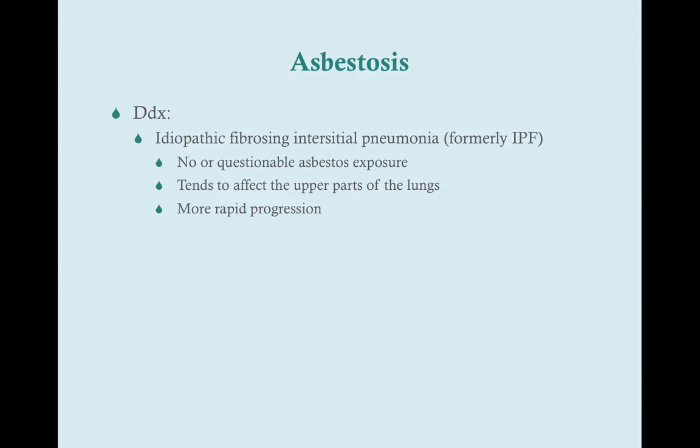IFIP is a heterogeneous group of disorders that will be addressed in a different section, but it is a diagnosis of exclusion. We have to rule out all other causes of restrictive interstitial lung diseases before we can diagnose IFIP — things like sarcoidosis, histiocytosis, TB, tumor, fungal infection, collagen vascular disease, environmental pathogens, occupational diseases, and drugs.